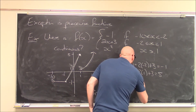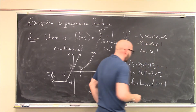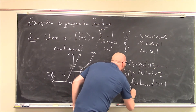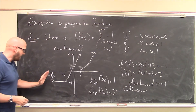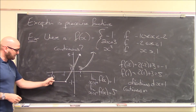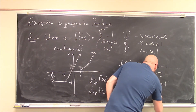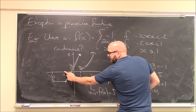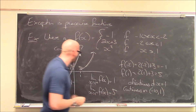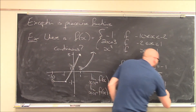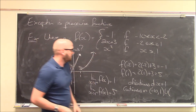I'm only discontinuous at x equals 1. We can say the function is continuous from negative 10 to positive 1, not including it, because we're discontinuous at 1. Then we skip 1 and union that with another interval from 1 all the way to infinity.